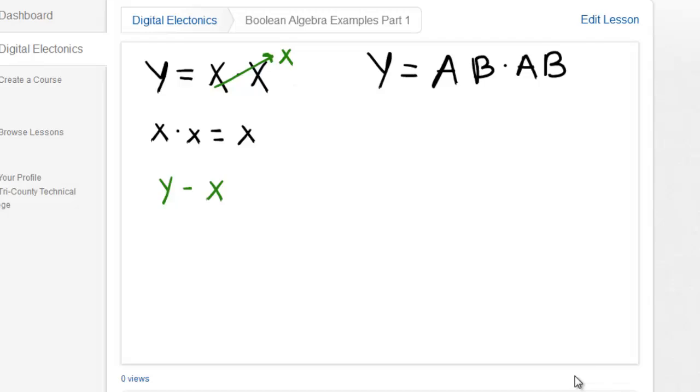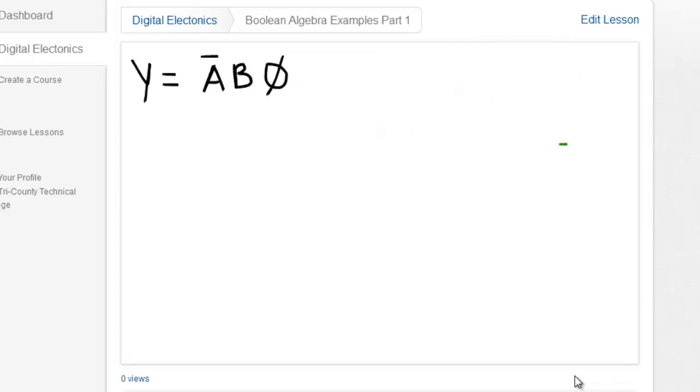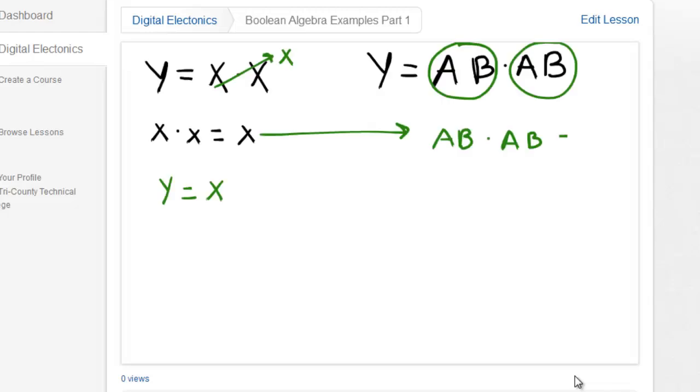So similarly, we can use that same rule here and there are a couple of ways you can do it. You'll notice that I have an identical term here and here. So I could just use a and b in place of x. And so I would rewrite the rule here to be a and b and a and b is the same as a, b.